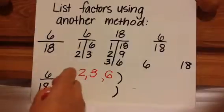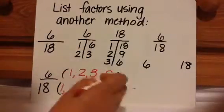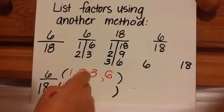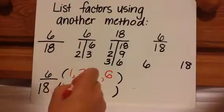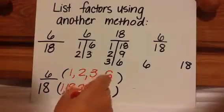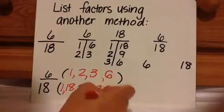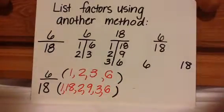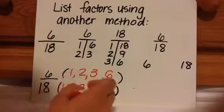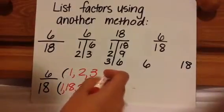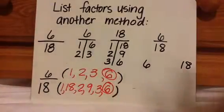Some people don't want to put them on the outside and then the middle, they just list it. So 1 times 18 is 18, 2 times 9 is 18, 3 times 6 is 18. Some people like to do that too, and then they find the greatest common factor that way.